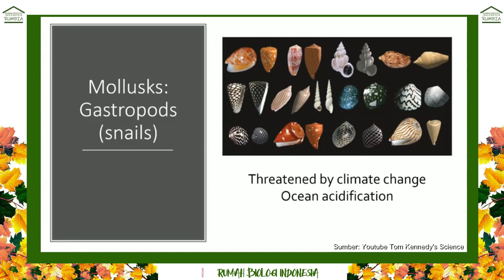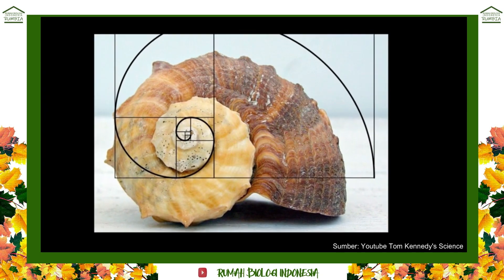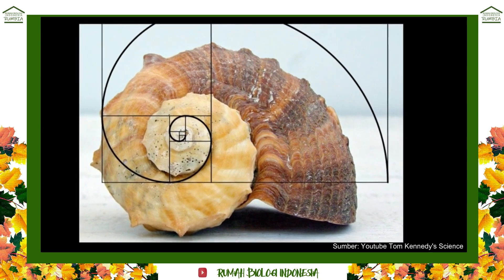A lot of gastropods have shells, and they're actually threatened by climate change because they make their shells out of calcium carbonate. The oceans are slightly alkaline at pH 8, which allows these organisms to take calcium and carbonate to make their shells. As the ocean becomes more and more acidic, it dissolves their shells. Their shells are beautiful and follow mathematical patterns like the golden mean and Fibonacci sequences.